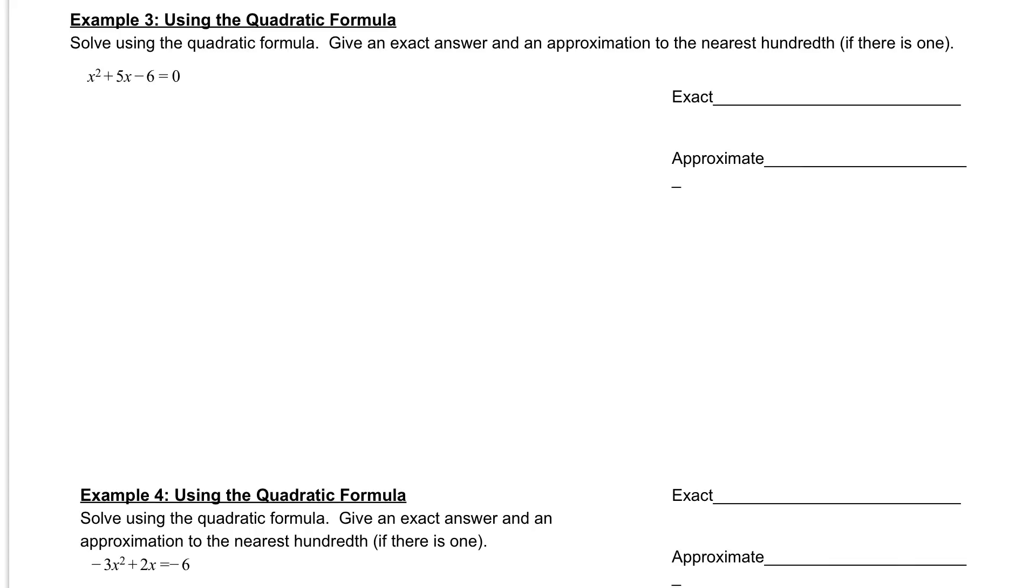First thing we're going to do is we're going to start by labeling our a, b, and c values. Remember, a is the number in front of our x squared. Since there's nothing in front of our x squared right now, it's understood that there's a 1 there. So a for this problem is 1.